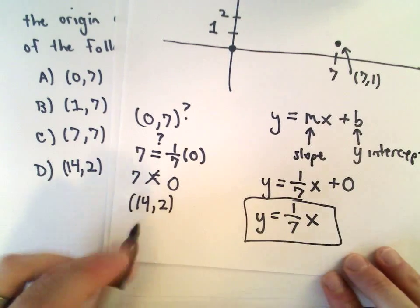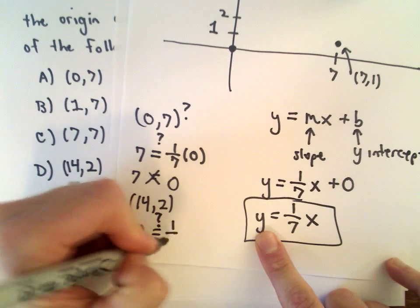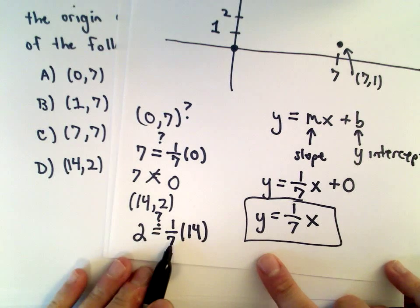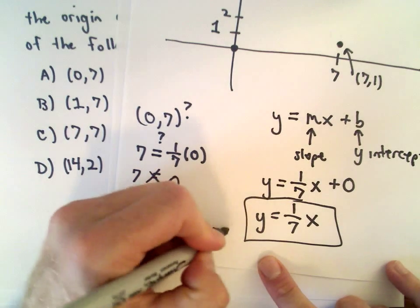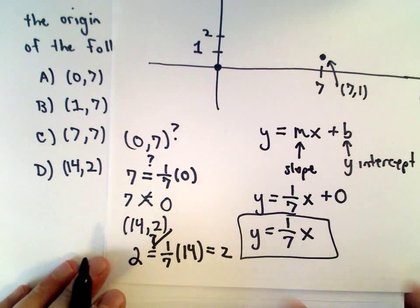I'm going to put 2 in for y and ask does that equal (1/7) multiplied by 14? This is the same thing as 14 divided by 7, which gives you 2. Yeah, 2 equals 2.